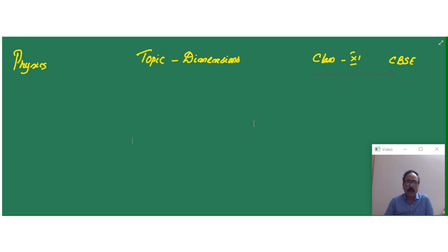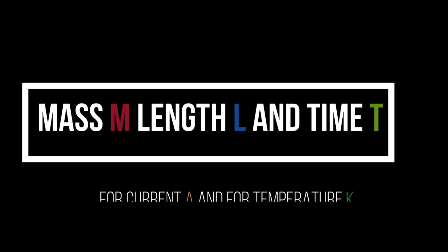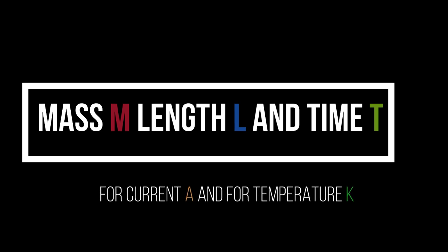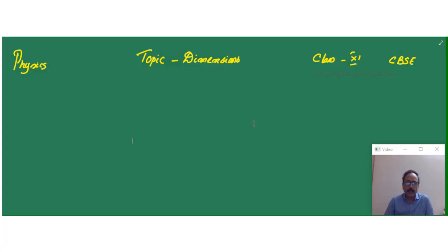Let's talk about the topic: dimensions, for Class 11. In this lesson we will come to know how to write the dimensions of several physical quantities. First of all we will write the dimensions of the physical quantities which you have already come across in your lower classes. To write the dimensions we normally use the mass term, length term, and time. In some quantities of electricity we use ampere, and in some quantities related to heat we take the help of Kelvin K.